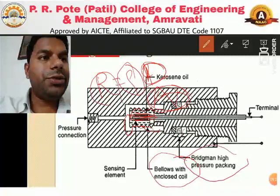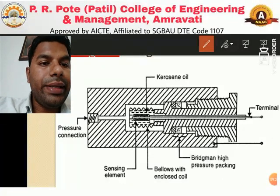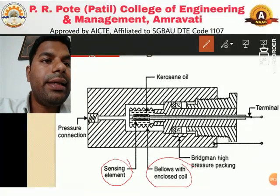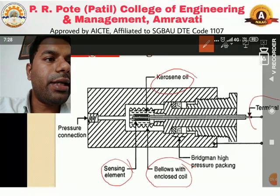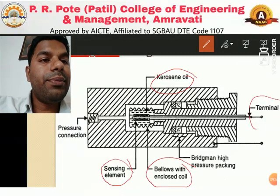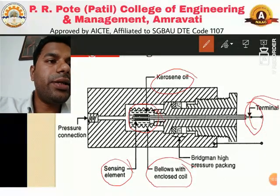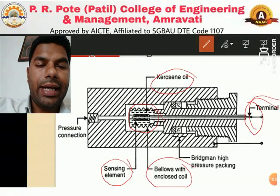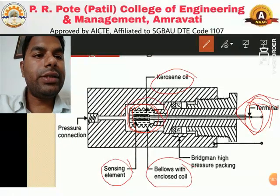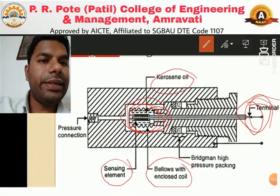Let me revise the construction and operation. The main sensing element is the strain gauge, surrounded by bellows with an enclosed coil. Kerosene oil is present inside the bellows. The strain gauge actually has four terminals, but two are shown here: one terminal measures the change in pressure, and the other terminal is open to atmosphere to measure atmospheric pressure. Since we are measuring the difference of pressure, one terminal shows atmospheric pressure and the other shows pressure inside the apparatus.